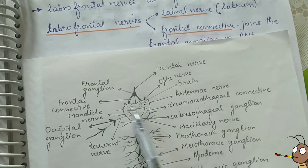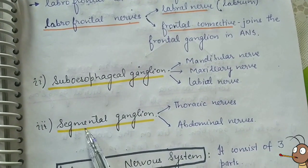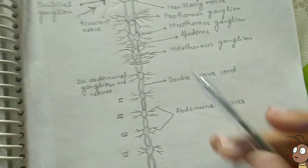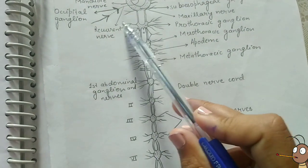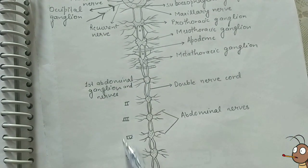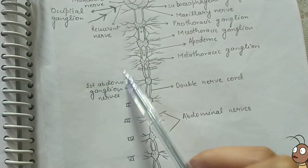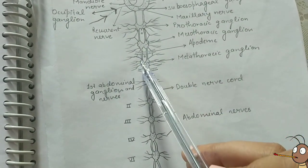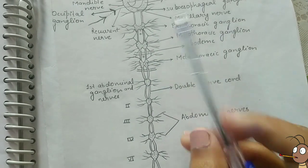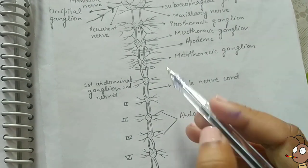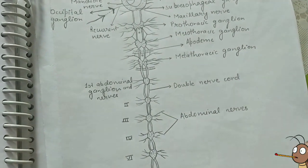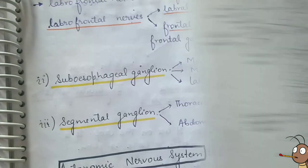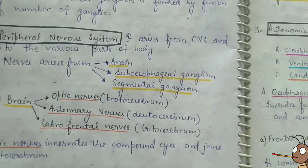From the brain and subesophageal ganglion, many nerves arise. The third source is the segmental ganglion. The segmental ganglia are further divided into thoracic ganglia and abdominal ganglia — prothoracic, mesothoracic, and metathoracic ganglia — from which many nerves arise and supply various parts of the body, forming a huge network of nerves making up the peripheral nervous system.